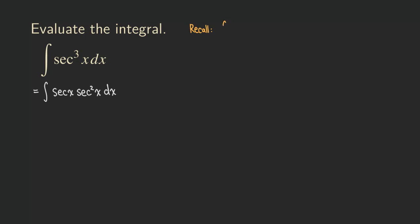Regarding integration by parts, the formula is actually the integral of u times dv is equal to u times v minus the integral of v du. And then the question is, what do we choose as u? What do we choose as dv?